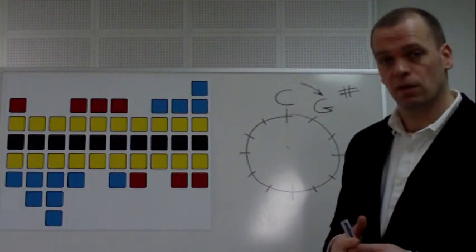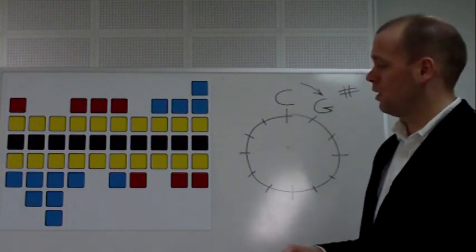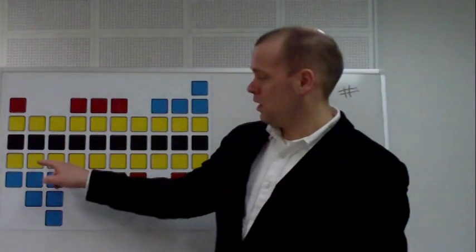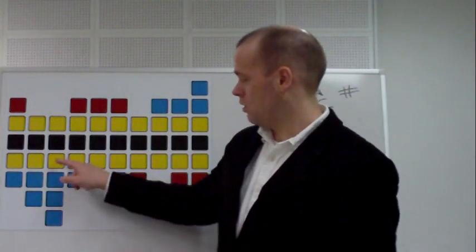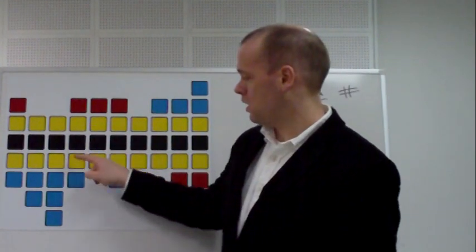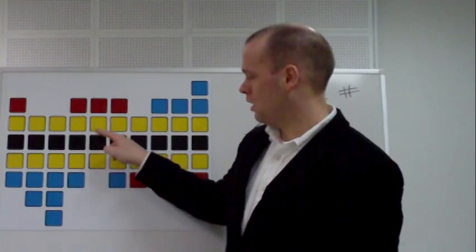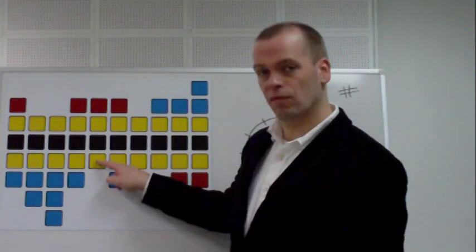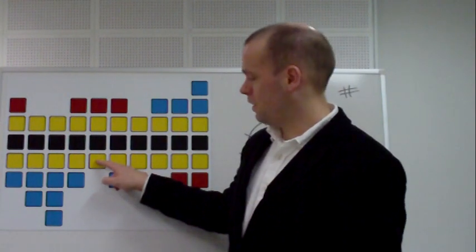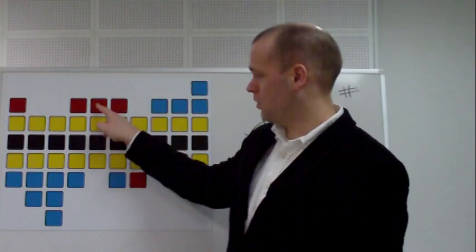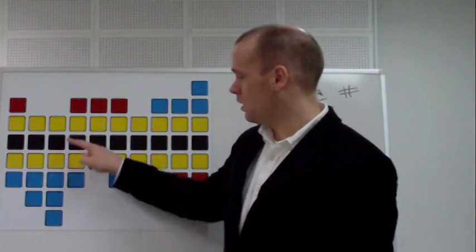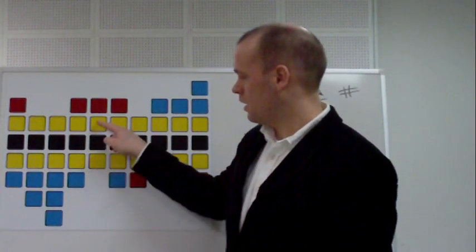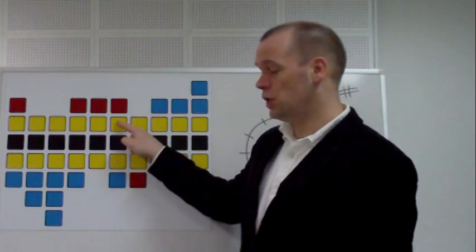And the sharp gets added on the seventh of the next key, so the seventh of the key of G. If we keep on counting from G, we go G, A, B, C, D, E, F is the seventh. That turns into F sharp. So we get G, A, B, C, D, E, F sharp, G.